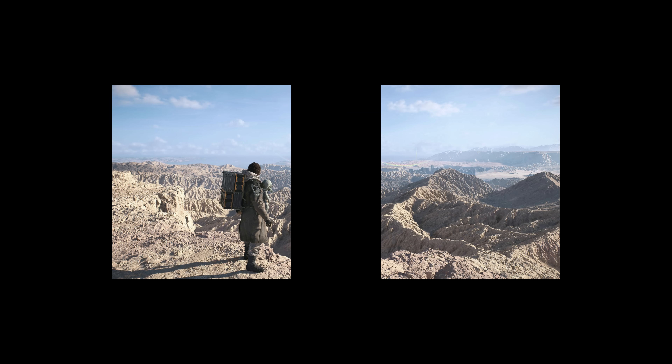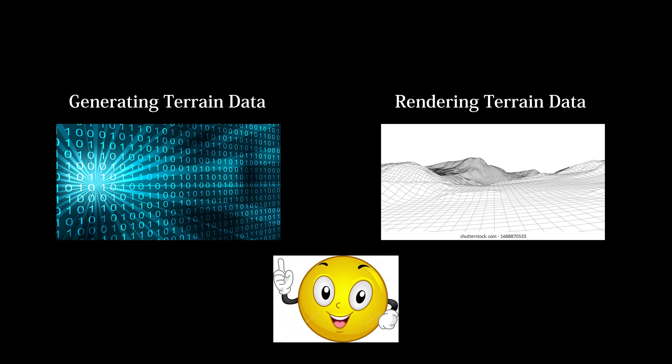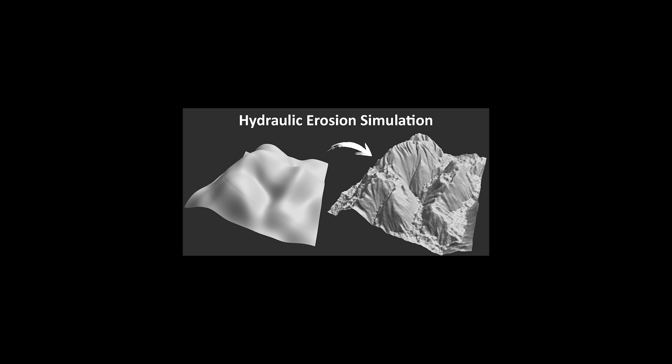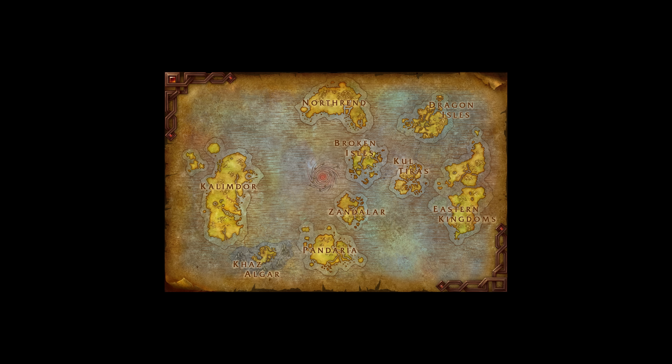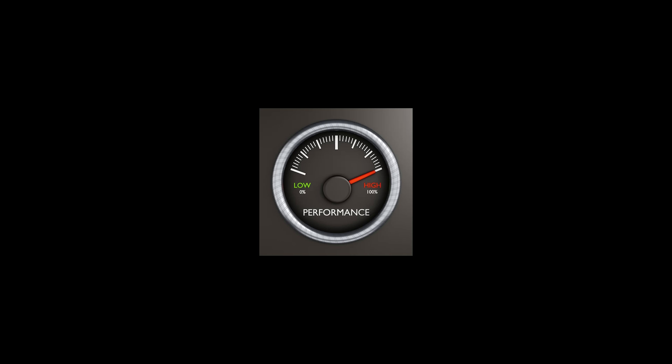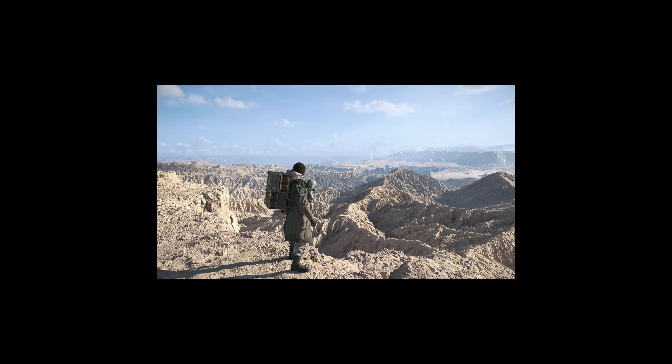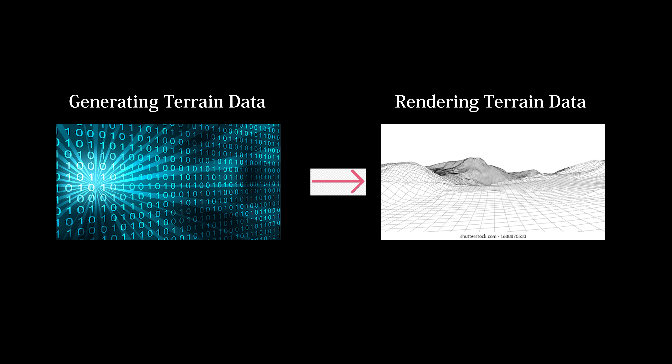Video game terrain can be divided into two tasks: creating the terrain data and rendering the terrain. As usual, this is much easier said than done. Methods for creating the terrain data range from hand-sculpting landscapes in ZBrush or Blender to complex erosion simulations, and depending on the scale of your game, lots of optimization techniques are required for real-time rendering of very large, detailed meshes. Worst of all, you can't have one without the other.